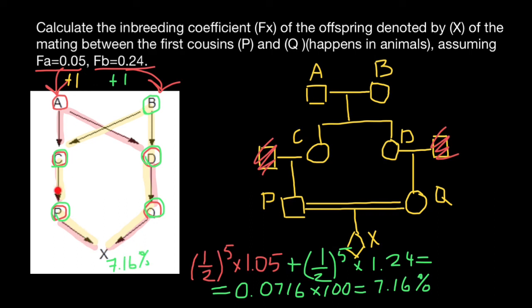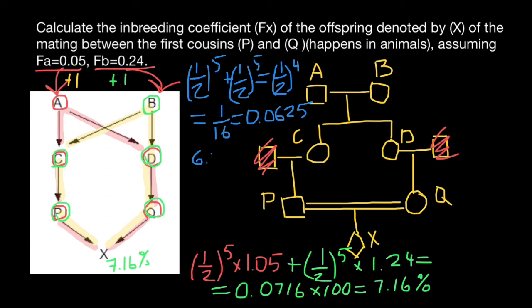If we didn't adjust our calculations with inbreeding of individuals A and B, our answer would be 1/2 to the power 5 plus 1/2 to the power 5. This would be 1/16, or 0.0625, or 6.25%. As you see, the adjusted number is 7.16. These calculations take into account inbreeding of individuals A and B. Hence this almost 1% difference in inbreeding.